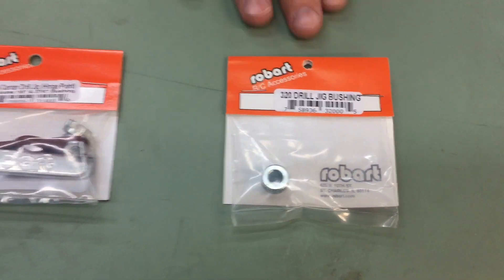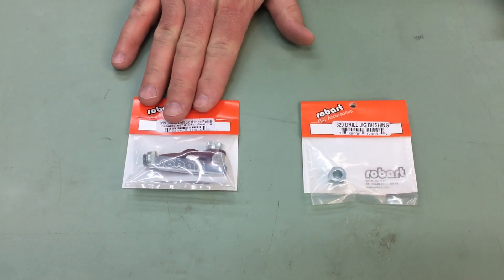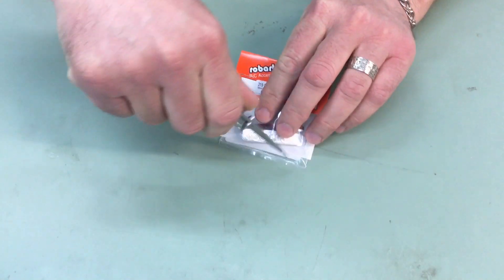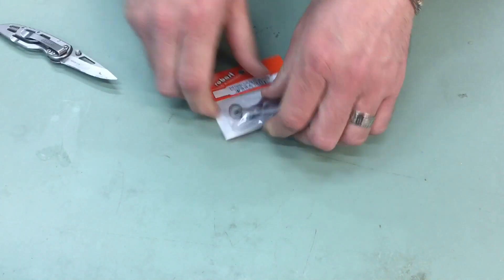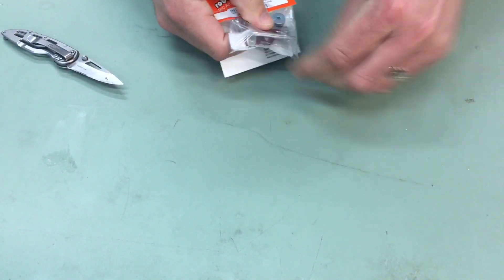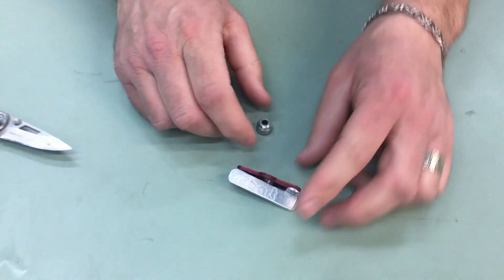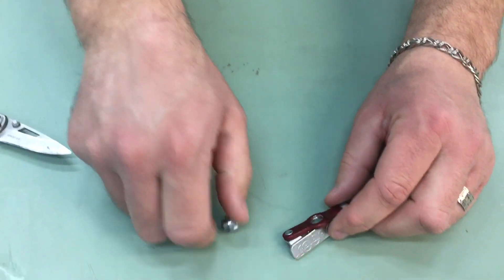So let's go ahead and open up the drill jig, put this together and I'll show you how this works. And just for ease of video I'm only going to put in the one bushing.